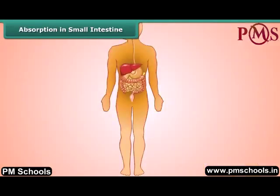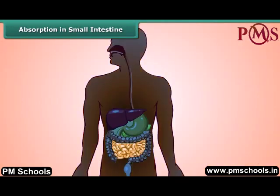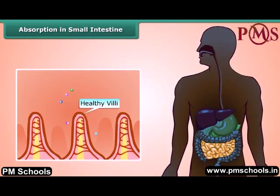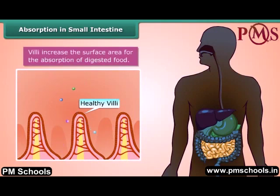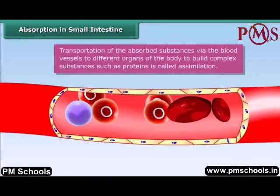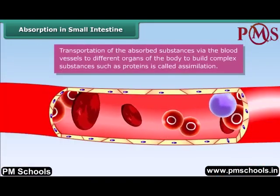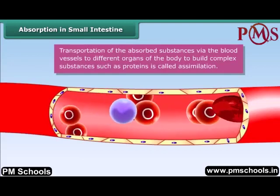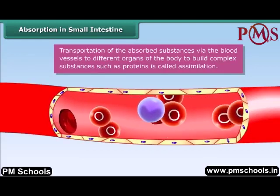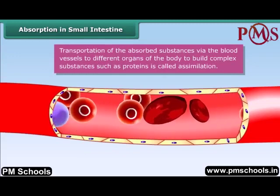There are tiny finger-like structures called villi lining the inside of the small intestine. Villi increase the surface area for absorption of digested food. The absorbed substances are then transported by blood vessels to different organs of the body, where they are used to build complex substances such as proteins.